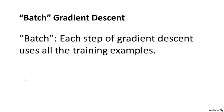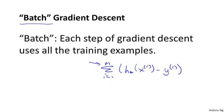Finally, the algorithm we just went over is sometimes called batch gradient descent. The term batch gradient descent refers to the fact that in every step of gradient descent, we're looking at all of the training examples. When computing derivatives, we're computing sums over all m training examples. There are other versions of gradient descent that do not look at the entire training set, but instead look at small subsets of the training data at a time — we'll talk about those versions later in this course.